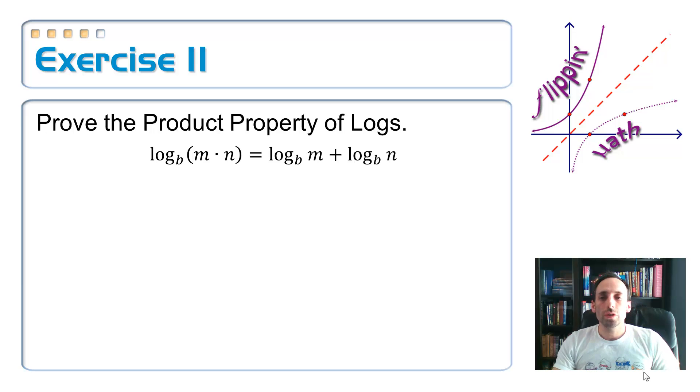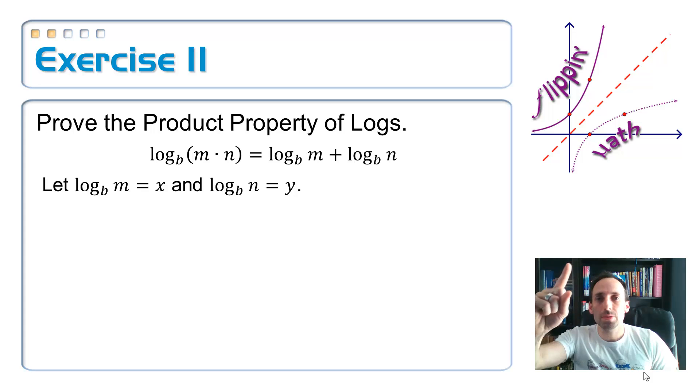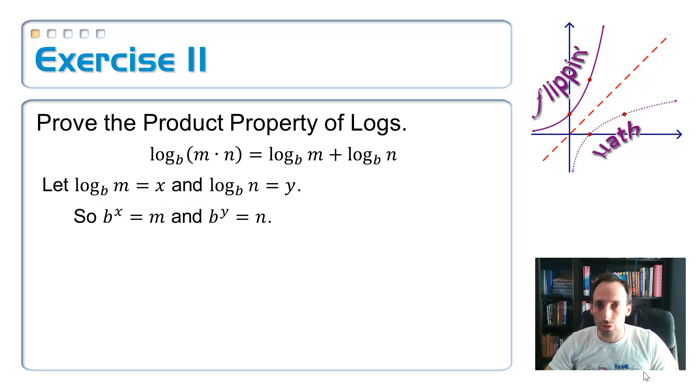Alright, so take a look. I'm going to start with just turning some of these logarithms into exponentials. So let's let the log base B of M equal to X and the log base B of N, let's make that equal to Y. And let's just go ahead and put those things into exponential form. So the first one is going to be B to the X power is equal to M and the second one B to the Y power is equal to N.